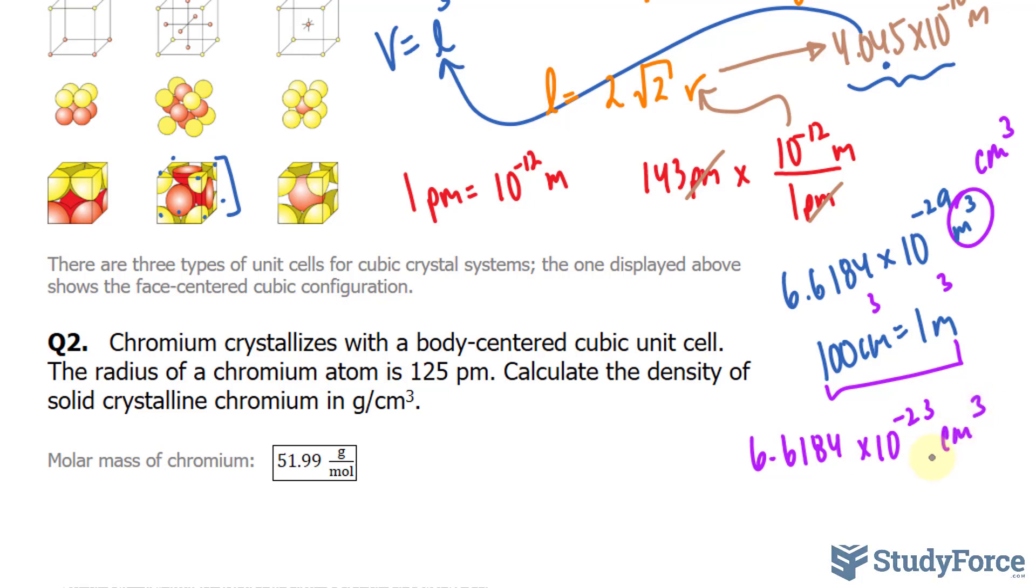We now have the volume, we also have the mass, so I'll divide the mass over this number, and we should end up with our density.